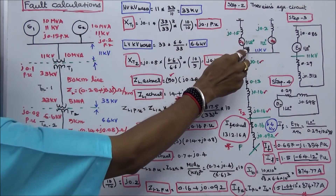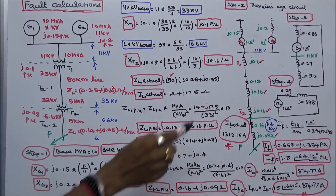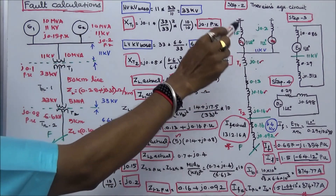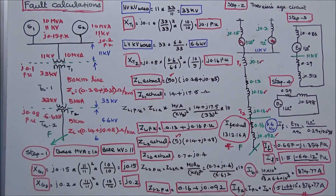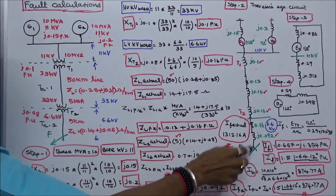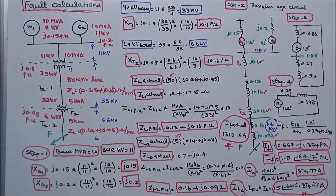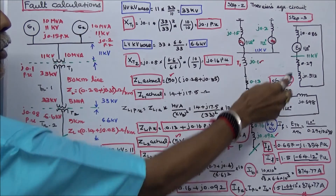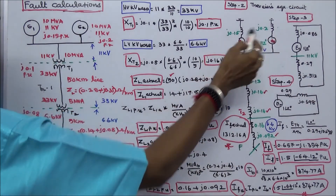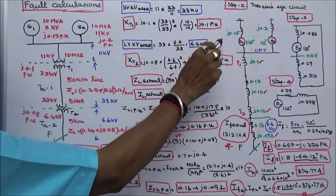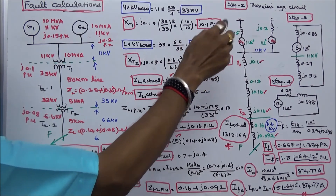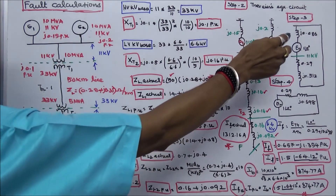In the third step, I simplify the network. The pre-fault voltage of both generators is 1∠0°, so the Thevenin voltage equals 1∠0°. The total series impedance from the bus to the fault point sums to resistance 0.29 and reactance j0.512. The two generator reactances j0.15 and j0.2 are in parallel: (j0.15 × j0.2) / (j0.15 + j0.2) = j0.086.